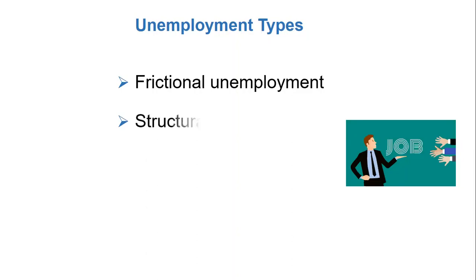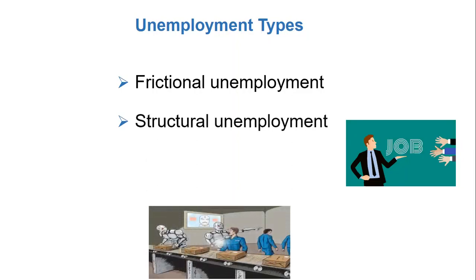The second type is structural unemployment, which is the portion of unemployment due to changes in the structure of the economy that result in a significant loss of jobs in certain industries. Although structural unemployment is expected in a dynamic economy, it is painful to the workers who experience it. Structural unemployment refers to a mismatch between the jobs available and the skill levels of the unemployed. For example, if robots replace some workers, it also creates new jobs — such as engineers needed to build those robots.